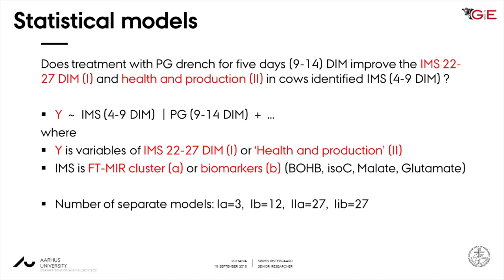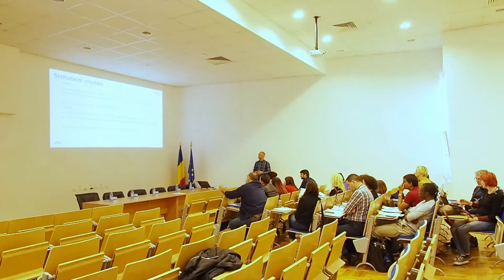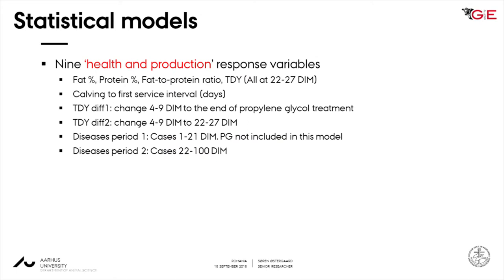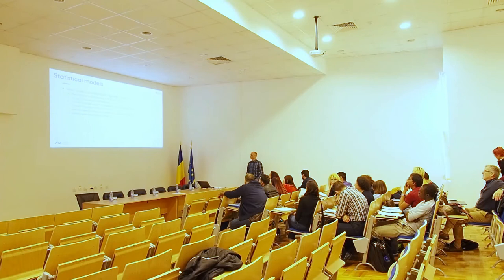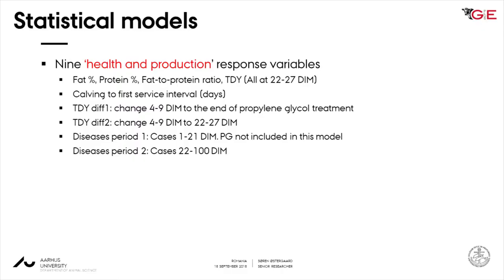We had a number of separate models in different combinations of response variables and the way we defined cows as being in the balanced or imbalanced group. The variables used to say something about the health and production of the cows included: fat protein content, fat-to-protein ratio, milk yield, test day milk yield, days to first service interval, change in test day milk yield from early to end of propylene glycol treatment, change in milk from early to after the second sampling, and disease treatments in period one and period two — where disease treatments were recorded from all treatments done in the herds.